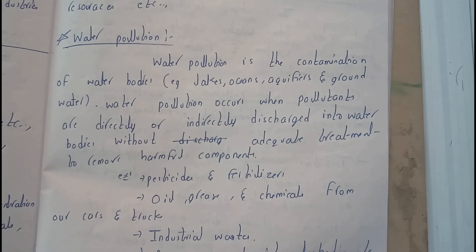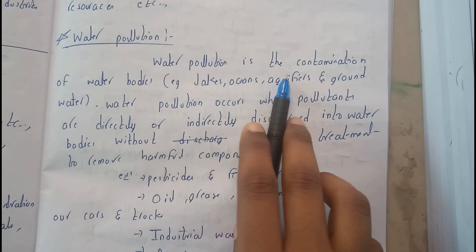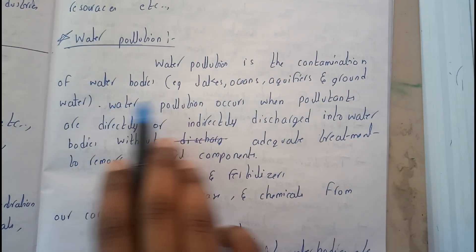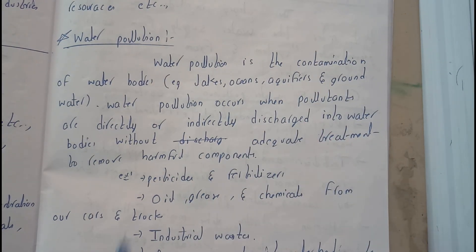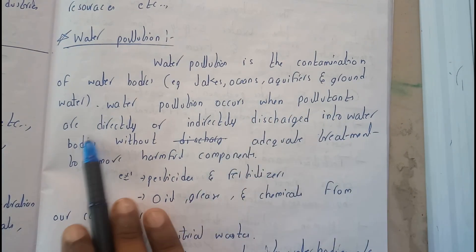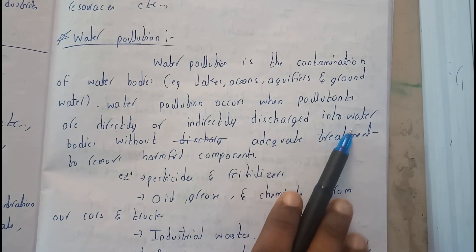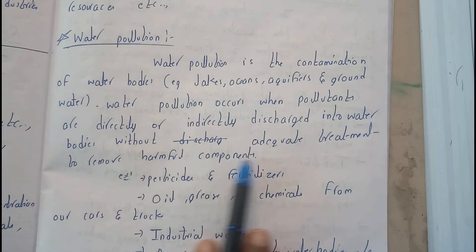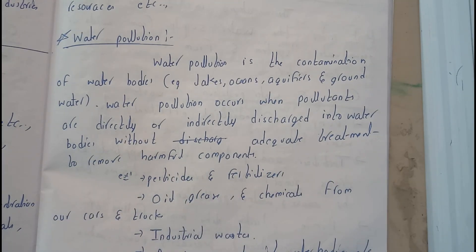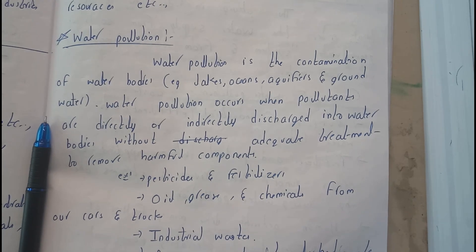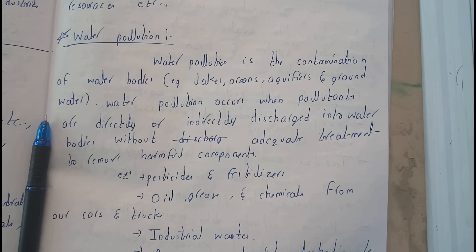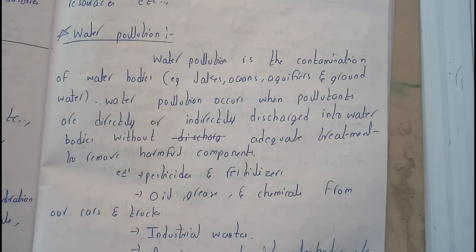What is water pollution? Water pollution is the contamination of water bodies. Water bodies are nothing but lakes, oceans, groundwater — everything comes under water bodies. Water pollution occurs when pollutants are directly or indirectly discharged into the water without adequate treatment to remove the harmful components. In other words, adding pollutants to water is water pollution — the water is contaminated due to the pollutants.